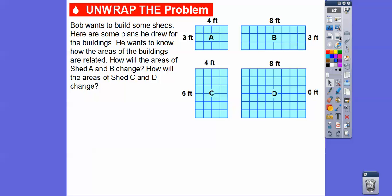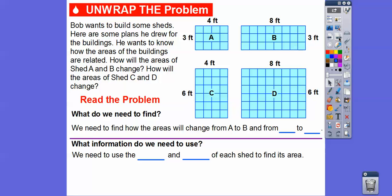Bob wants to build some sheds. Here are some plans that he drew for the buildings. He wants to know how the areas of the buildings are related. Shed A has a length of 3 and a width of 4. Shed B has a length of 3 and a width of 8. How will those areas change? And for Shed C, the length is 6 and the width is 4, and Shed D has a length of 6 and a width of 8.